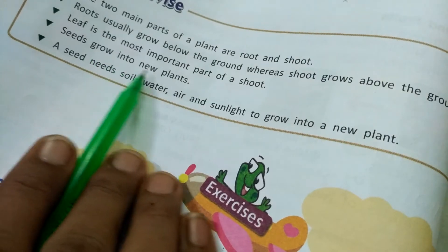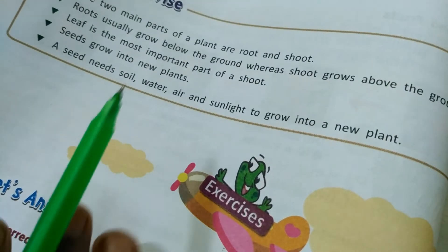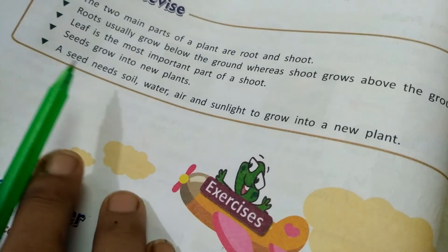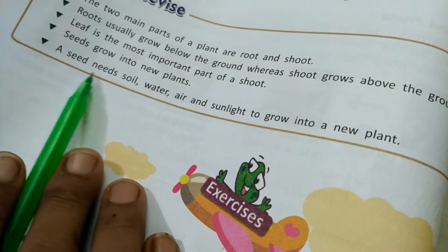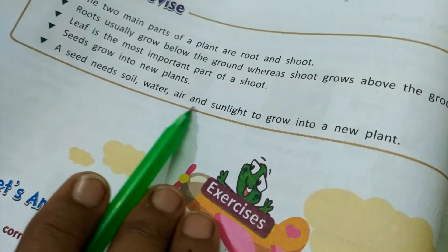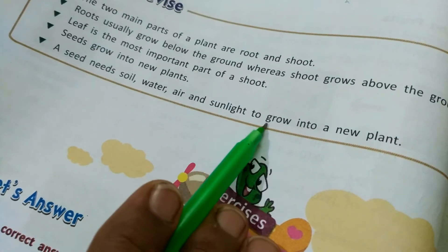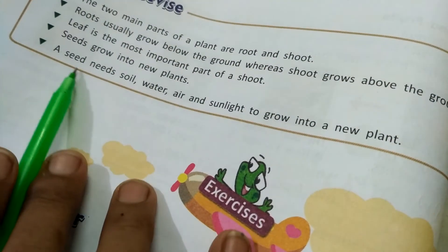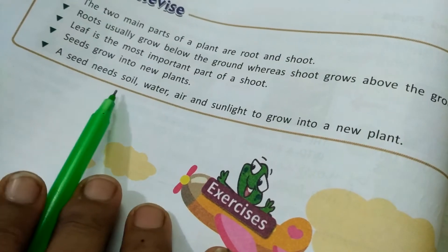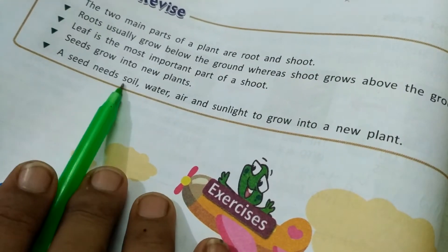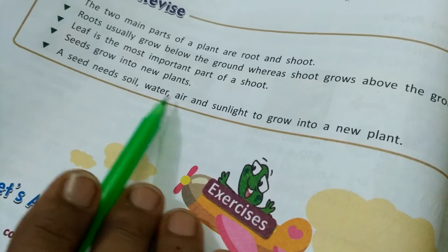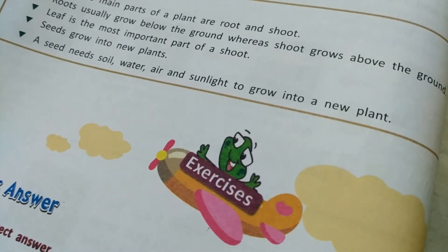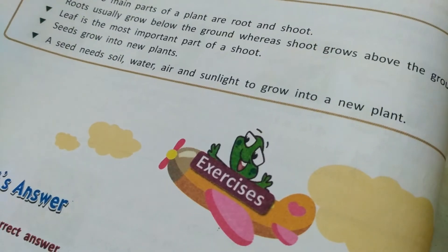Seeds grow into new plants through the process of seed germination. A seed needs soil, water, air, and sunlight to grow into a new plant. So a seed needs mitti (soil), paani (water), hawa (air), and sunlight so that it could grow into a new plant.